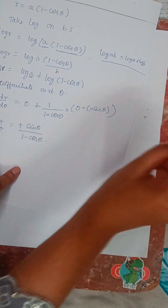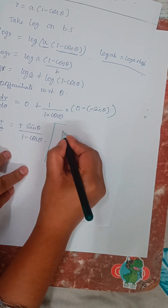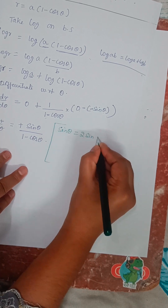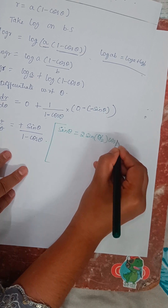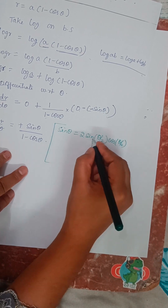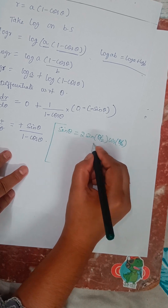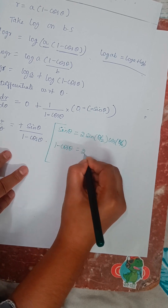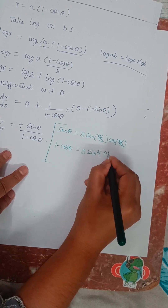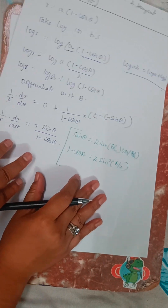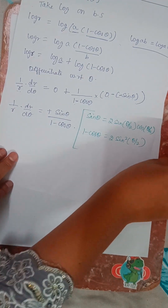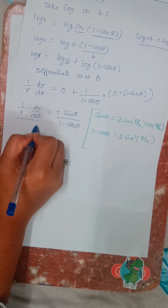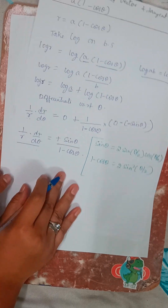Now, we can write sinθ = 2·sin(θ/2)·cos(θ/2), and 1 - cosθ = 2sin²(θ/2). We know that (1/r)(dr/dθ) equals cot φ.